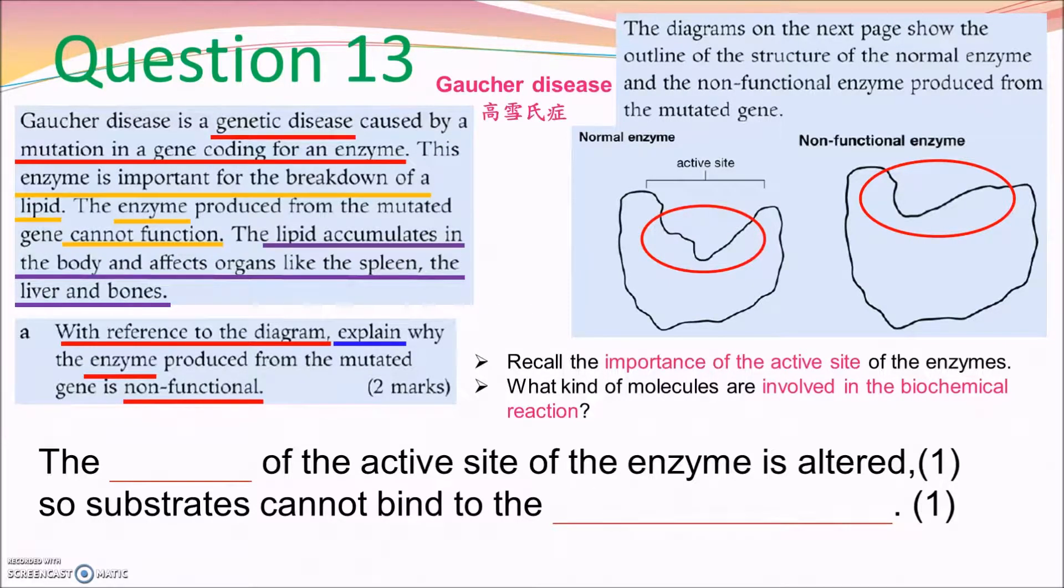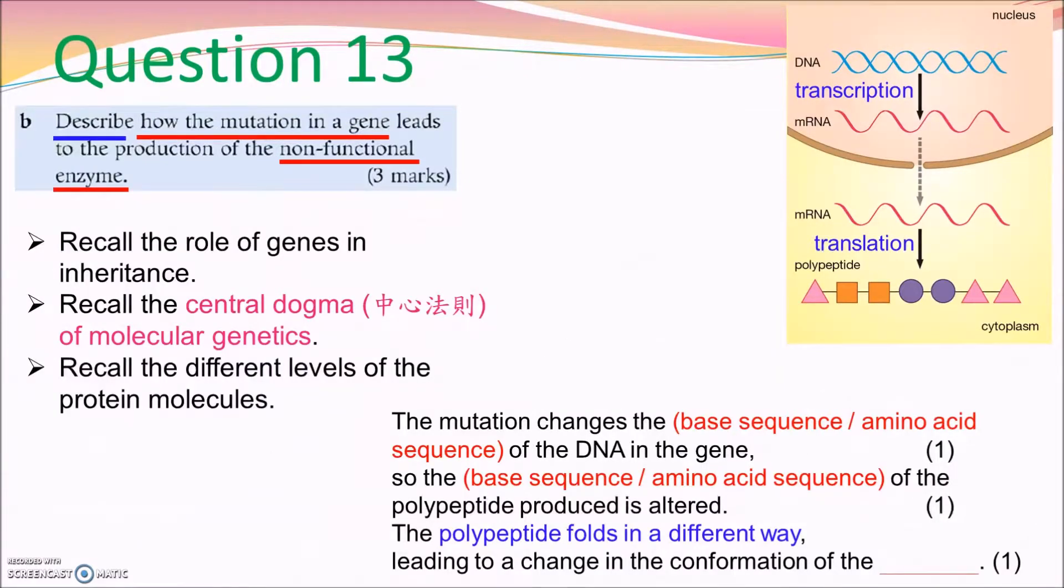What does the active site bind to and speed up the metabolic activity? This answer framework is given in order to help you to construct your answer. Part B asks us to describe how the gene mutation leads to the production of non-functional enzyme. Just like the previous question, we call the central dogma first. In the DNA, what sequence is determining the other sequence in the protein? So you need to know that in the DNA, which sequence to determine what sequence in the protein. Then, relate the different level of protein chain to their different function.